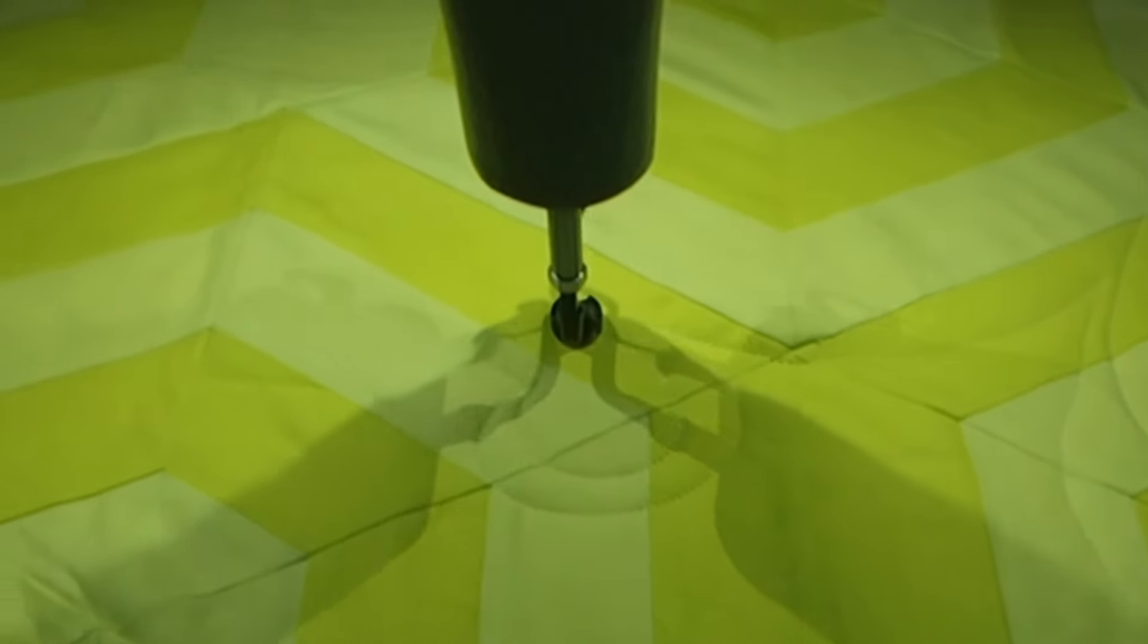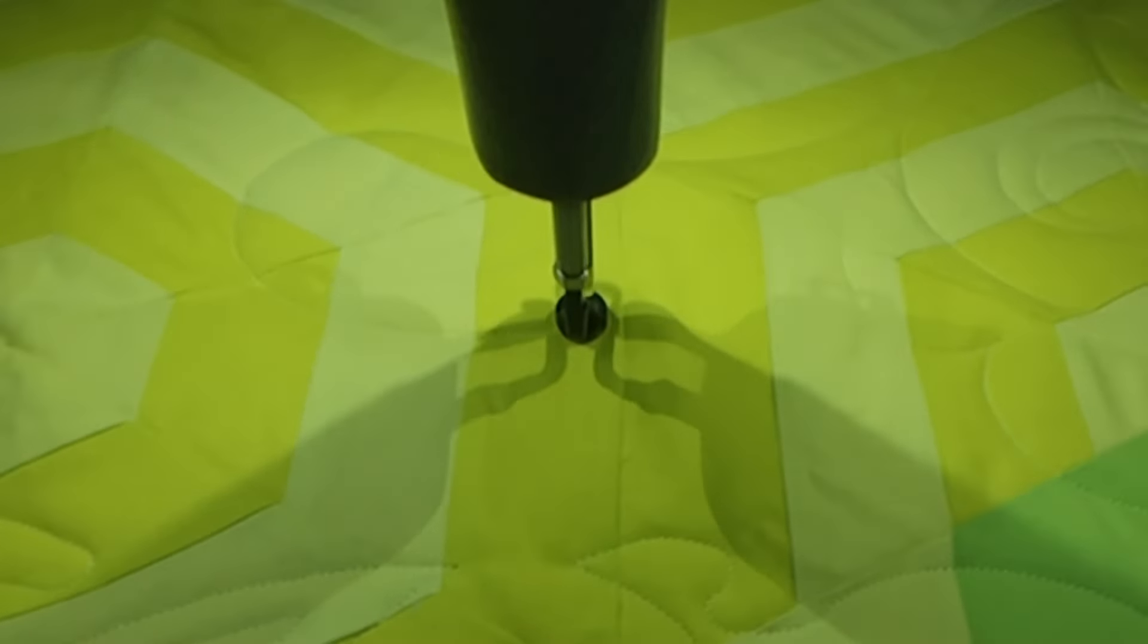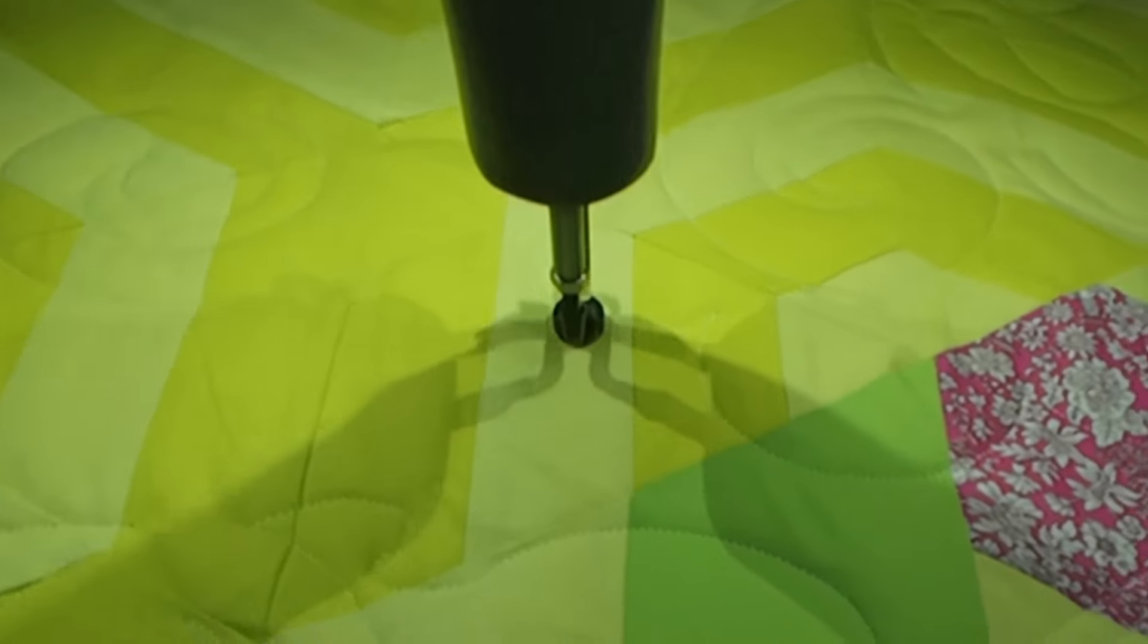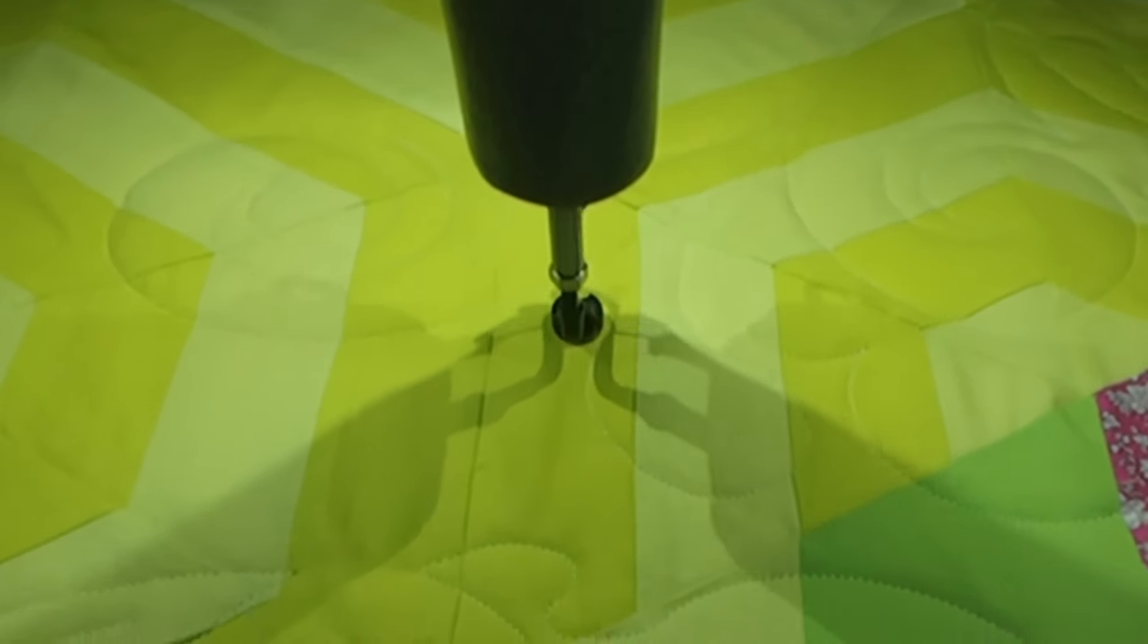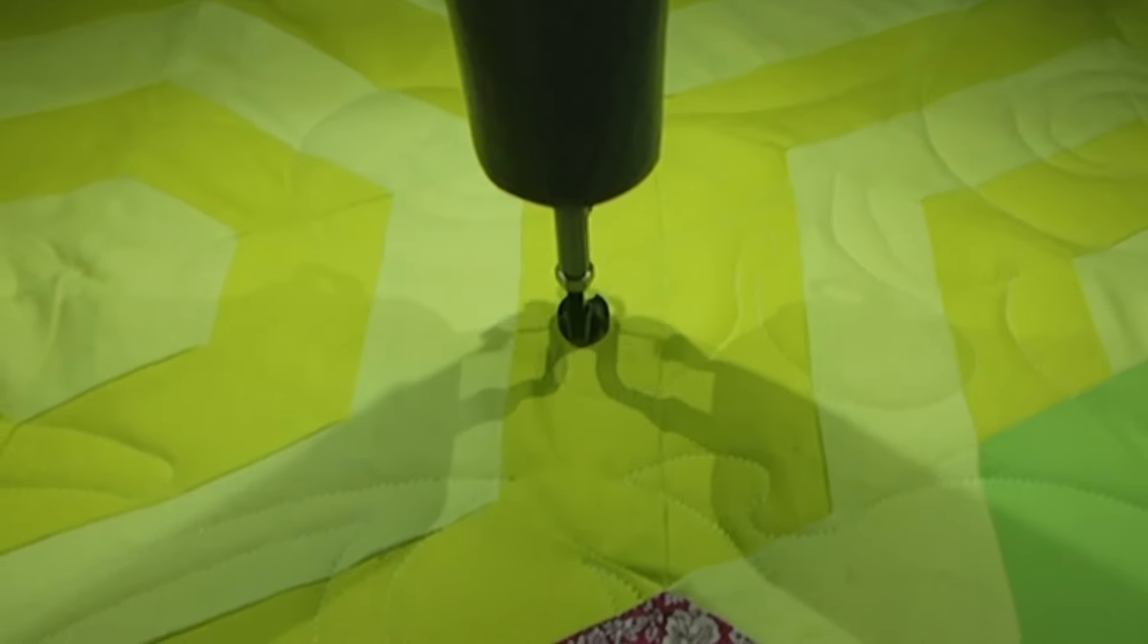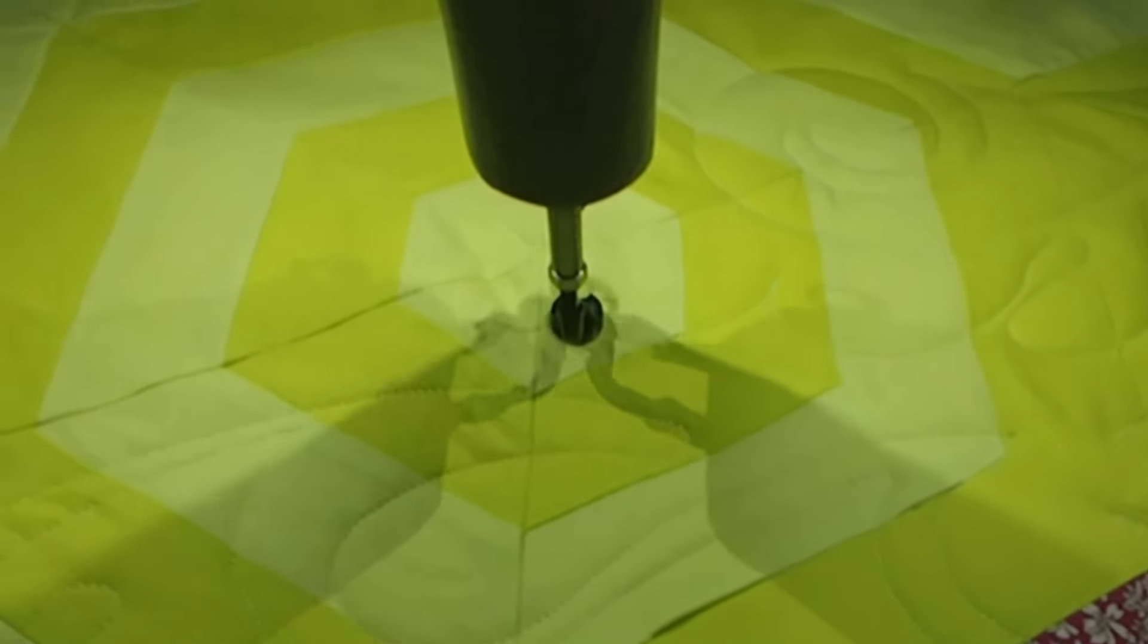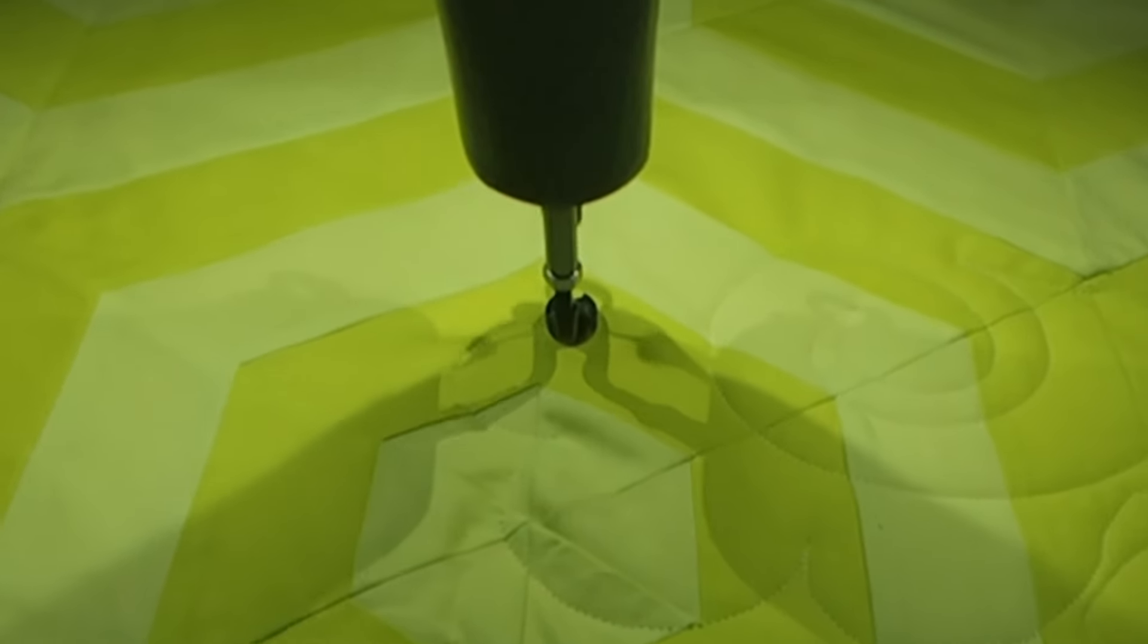I think it turned out so lovely. We did a medium density on the quilting. Nothing too scrunched up and not too far apart. Just enough. And each quilt will kind of have its own way, I feel, right? Sometimes you want it a little bit more close together. Sometimes you want it a little bit more airy apart.